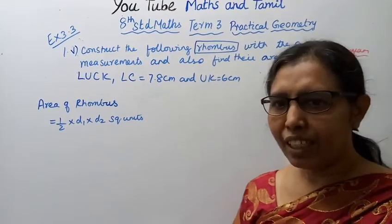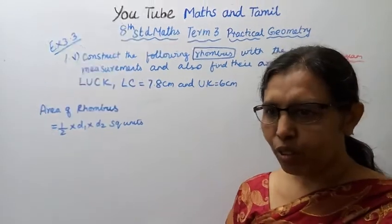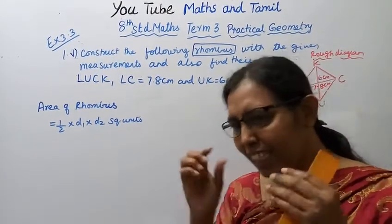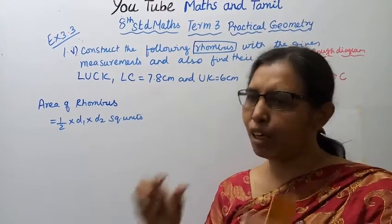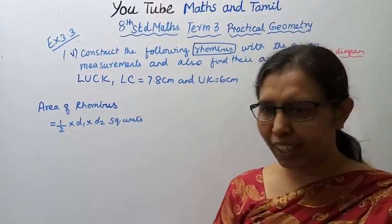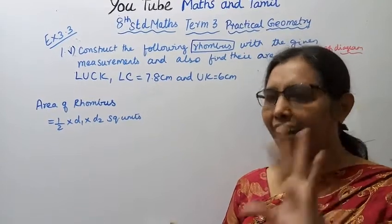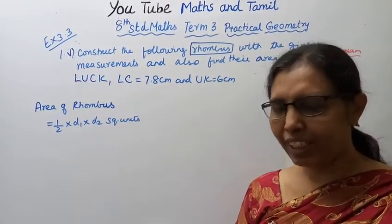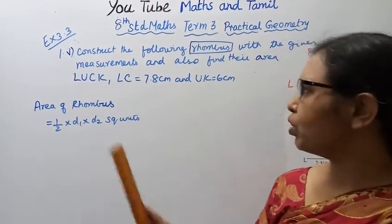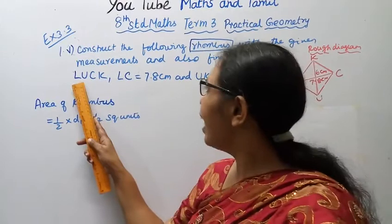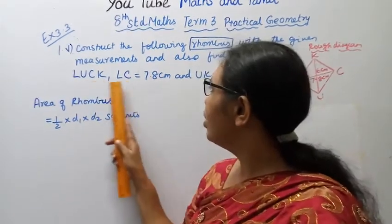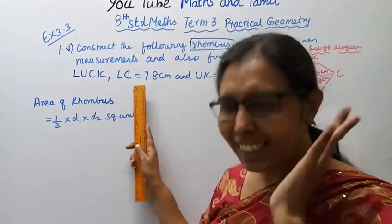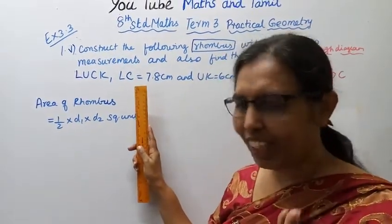Now let's look at the properties. In a rhombus, the sides are equal and the diagonals are also equal. We will use the diagonals LC and LU for the construction.